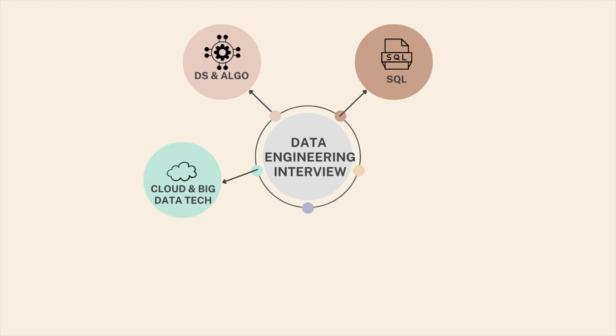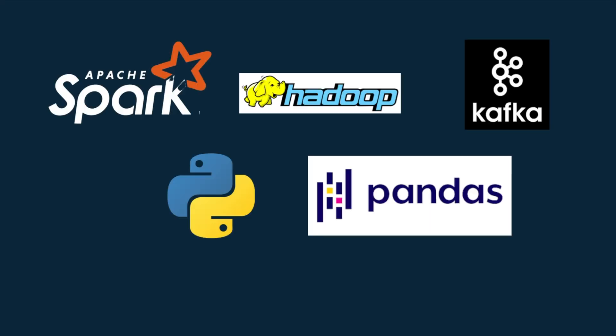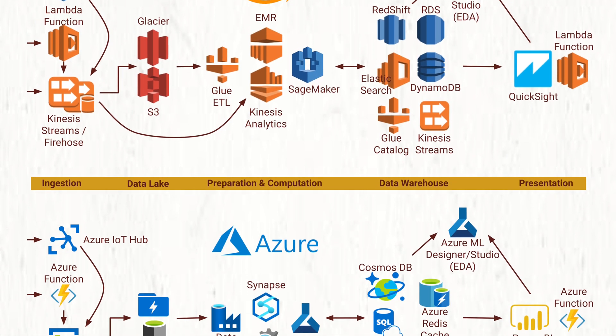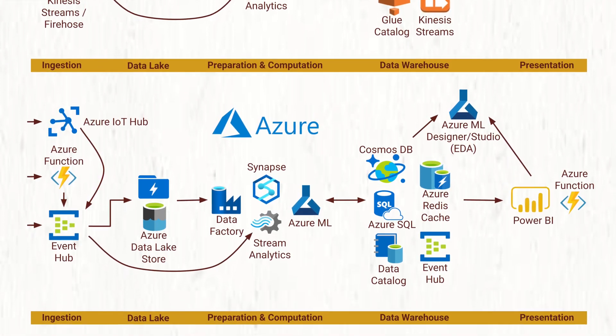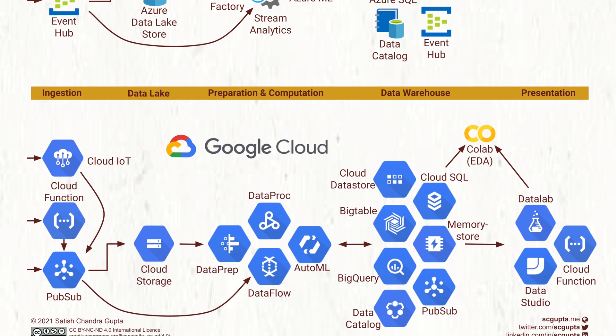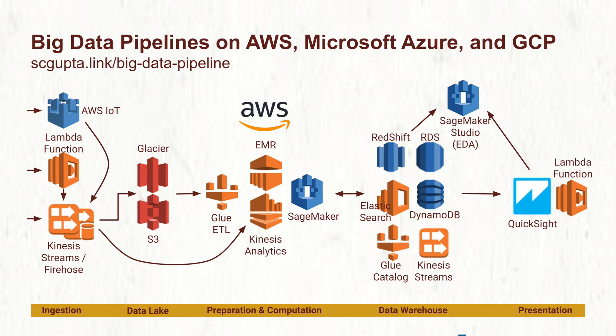The third interview component is cloud and big data technology — basically the knowledge of the tech stack used by a data engineer. It includes open source frameworks such as Spark, Hadoop, Kafka, Python, and data manipulation tools such as pandas. It also includes cloud technologies used for data engineering: in the data warehousing space, BigQuery from Google or Redshift from AWS; frameworks such as Cloud Dataproc and Dataflow for transformation and streaming; and platforms like Vertex AI or SageMaker from AWS. You need knowledge and experience in both open source technologies and these cloud services.